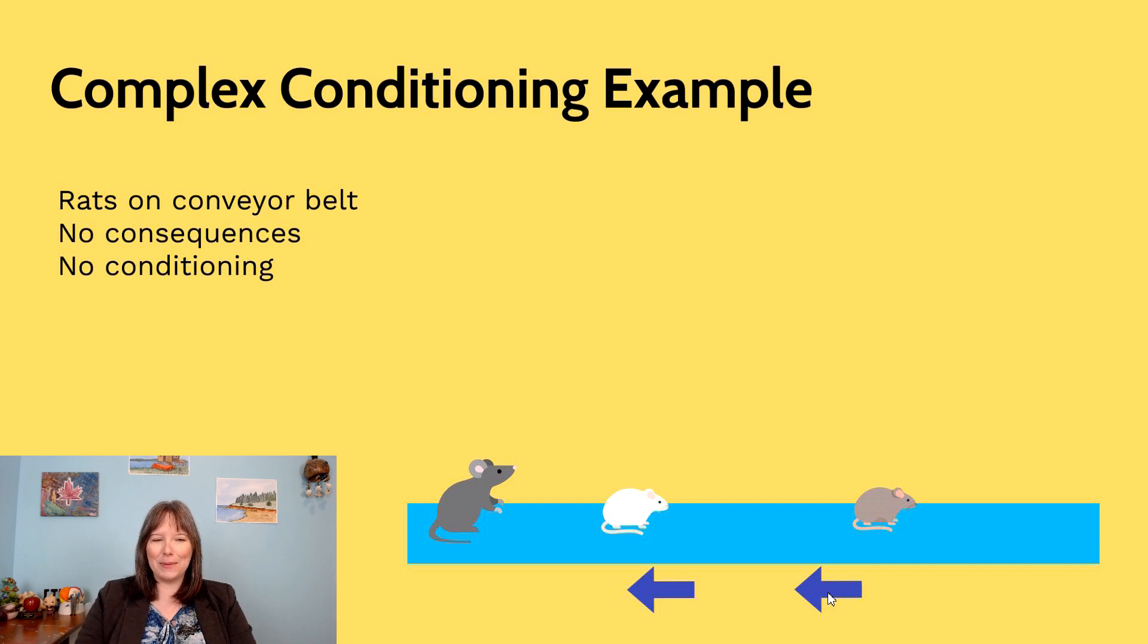It starts off with some rats on a conveyor belt. There's no consequences, there's no conditioning happening. They can turn the conveyor belt on and the rats get pushed leftward. They can turn the conveyor belt off and the rats can run around.